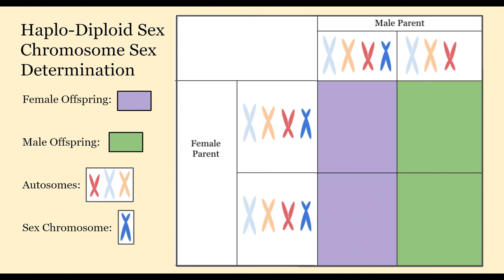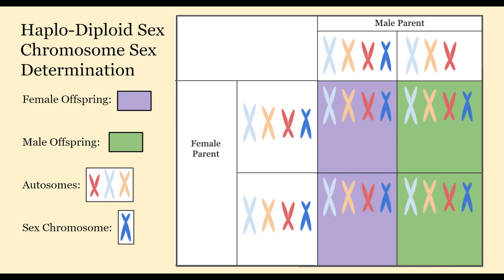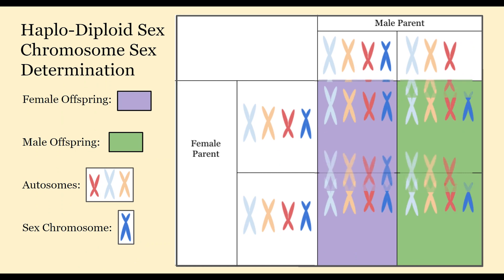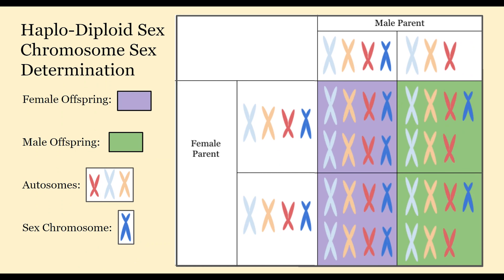There is also haplodiploid sex chromosome sex determination. In this mechanism there is only one sex chromosome, and the sex of the offspring is determined by how many of those sex chromosomes are present. If we have two sex chromosomes then the offspring is female, and if there's only one then it's male. So in this case the male parent does determine the sex of the offspring.